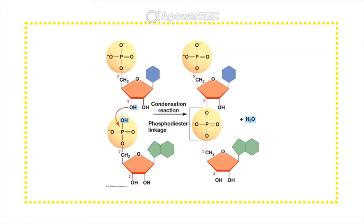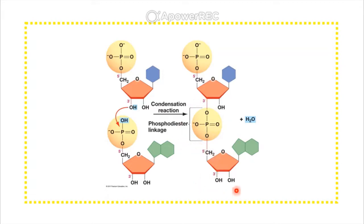The phosphodiester bond is the linkage between the phosphate group on the five prime end of a nucleic acid and the hydroxyl group on the three prime end of the sugar of a nucleic acid. It's called that because there are two (di) ester bonds on each side of the phosphate. You need to know each component of a nucleic acid: the nitrogenous base, the ribose sugar, the phosphate group, the three prime OH group, and the five prime phosphate group.